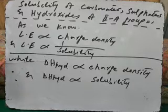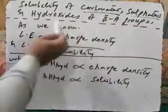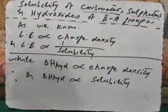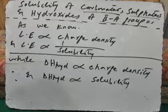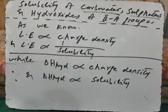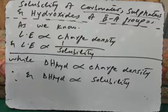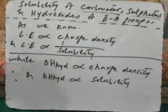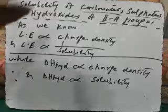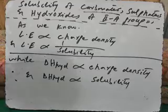Assalamu alaikum students. Let's discuss the solubility of carbonates, sulfates, and hydroxides of alkaline earth metals down the group — what happens when we go down the group in alkaline earth metals to the solubility of carbonates, sulfates, and hydroxides. As I have discussed in detail some of the properties like lattice energy, heat of hydration, and their relationship with charge density and solubility.